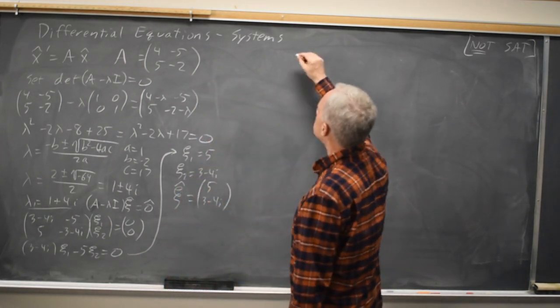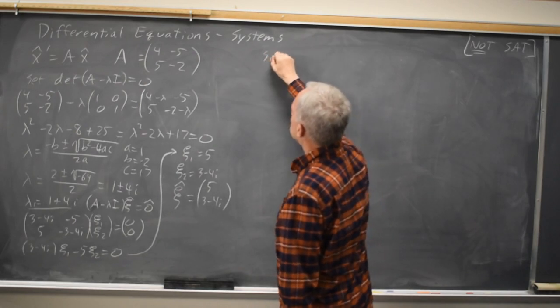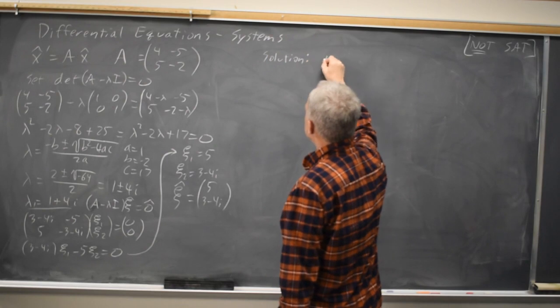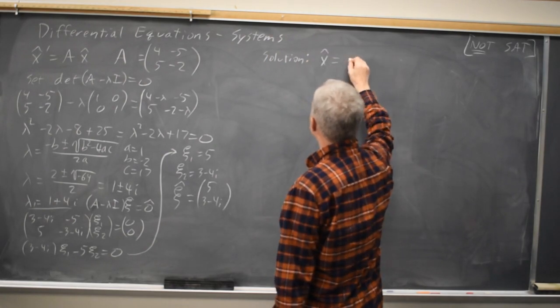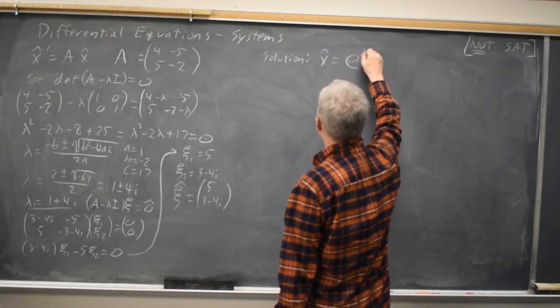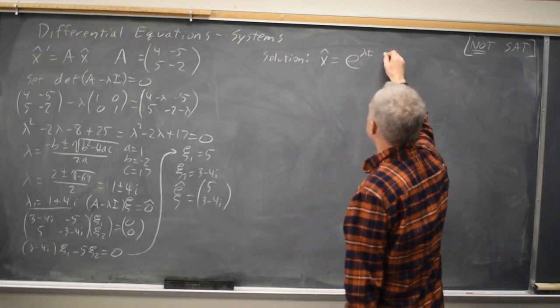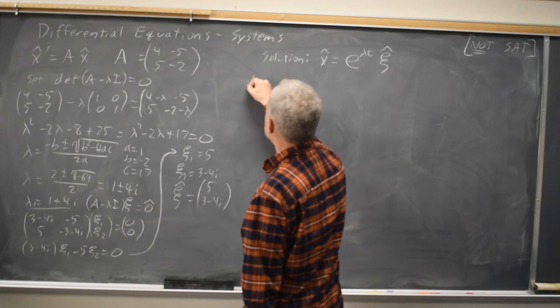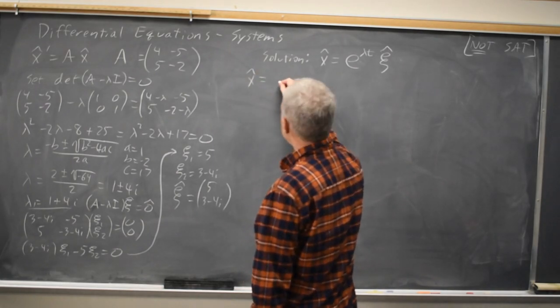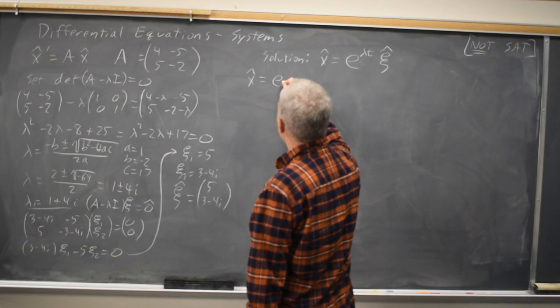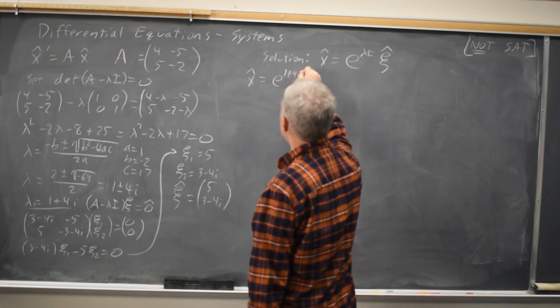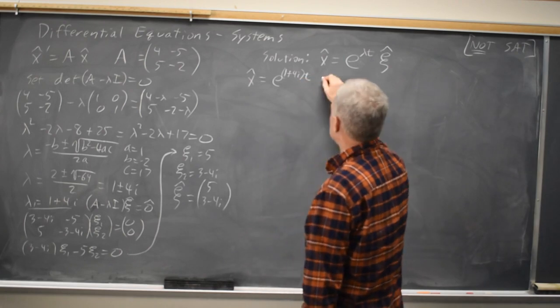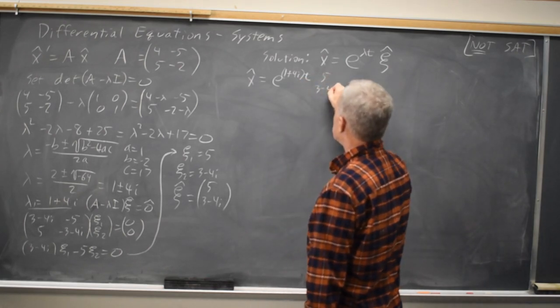Our solution is x, the solution, equals e to the lambda t times the corresponding eigenvector. So in this case, that's x equals e to the 1 plus 4i, t times 5, 3 minus 4i.